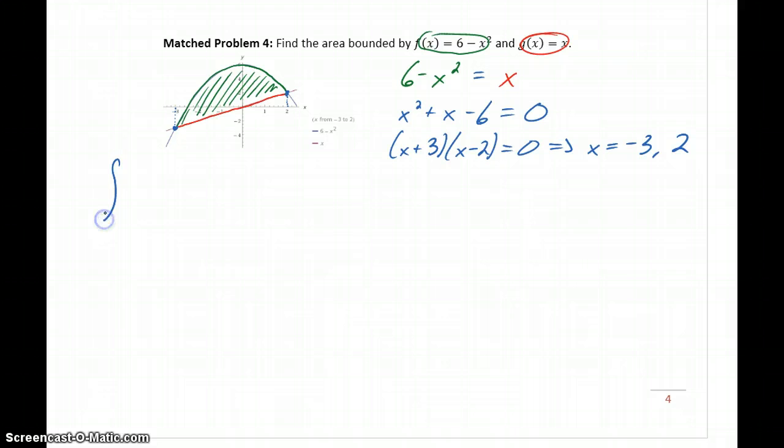Now that we know those intersection points, we're going to be integrating from -3 to 2 of (6 - x²) - x.